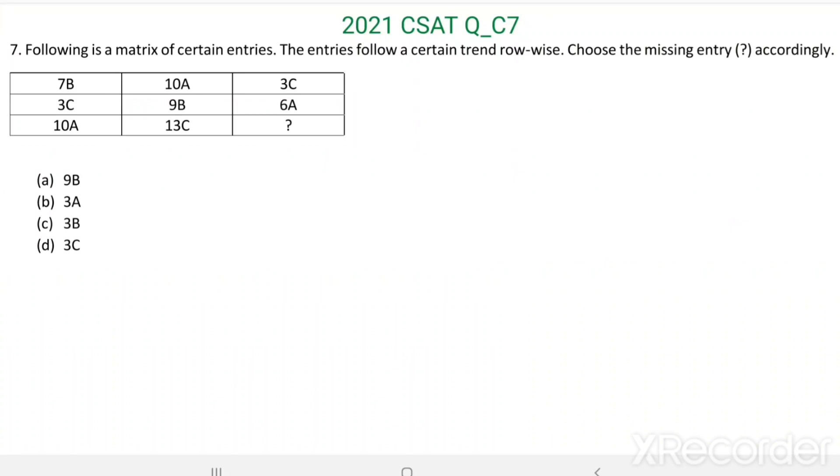Question number seven. Following is a matrix of certain entries. The entries follow a certain trend row-wise. Choose the missing entry in place of this question mark accordingly.